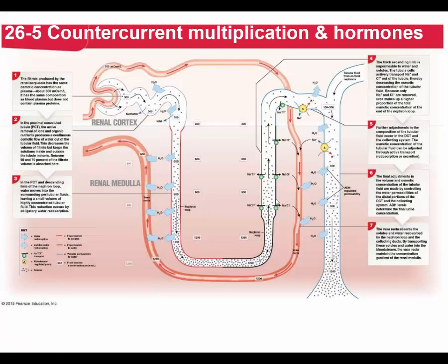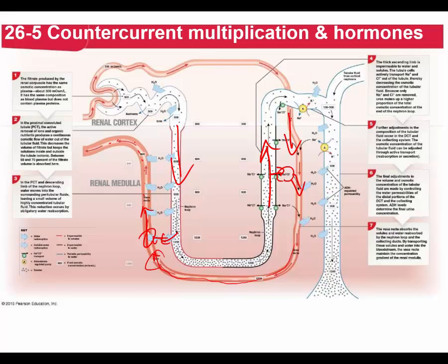The collage picture illustrates the countercurrent mechanism: blood flows down in the vasa recta while filtrate flows up in the ascending limb of the loop of Henle — opposite directions. Sodium chloride reabsorbed from the ascending limb enters the blood, making it saltier. As that salty blood flows upward past the descending limb, water from the filtrate exits into the blood, making the blood less salty — this exchange is why it's called the countercurrent mechanism.